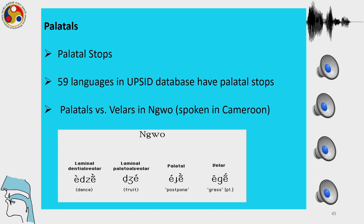We will play these sounds from Ngo spoken in Cameroon. In Ngo, we have a distinction between laminal denti-alveolar, laminal palato-alveolar, palatal, and velar. These are the 4 places of articulation which we will play now, showing distinctions between the laminal denti-alveolar, the laminal palato-alveolar, palatal, and velar.